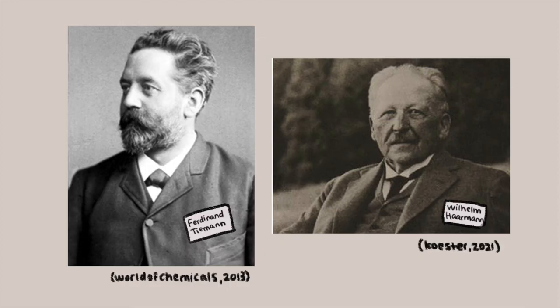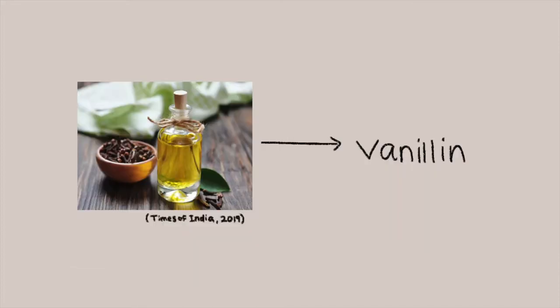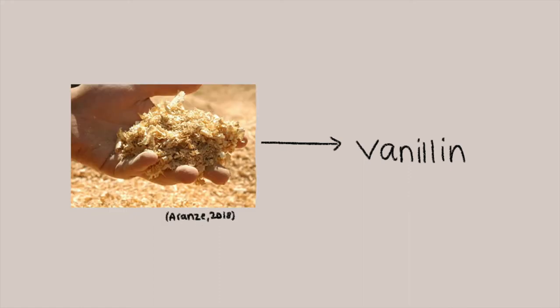The origin of synthetic vanillin can be traced back to two German scientists, Ferdinand Thiemann and William Harmon in 1874. They figured out the chemical structure of vanillin. Originally, synthetic vanillin was synthesized with eugenol from clove oil, then from lignin, a byproduct of wood pulp in paper production.